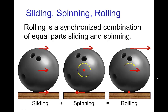Another way to picture rolling is that it's a combination of equal parts sliding motion and spinning rotation. With pure sliding, all points of the ball move together at the same speed. On the other hand, if the ball were spinning in place, the center would be stationary, the top moving clockwise, and the bottom counterclockwise. With rolling — equal parts sliding and spinning — the bottom is momentarily stationary, the middle moves at a certain speed, and the top rim moves at twice the speed of the middle.